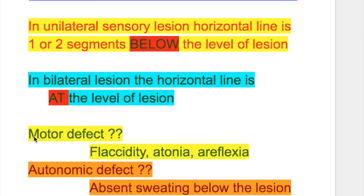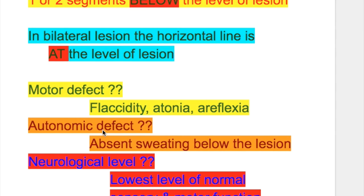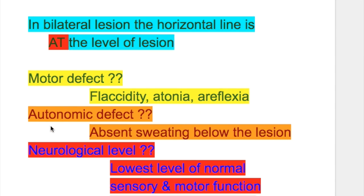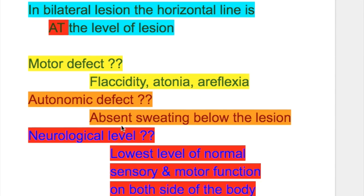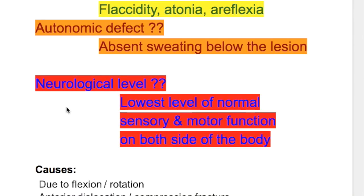The upper limit of the motor defect at the horizontal line features flaccidity, atonia, and areflexia from involvement of the anterior horn cells. The autonomic defect is absent sweating below the level of the lesion. The neurological level is defined as the lowest level of normal sensory and motor function on both sides of the body.